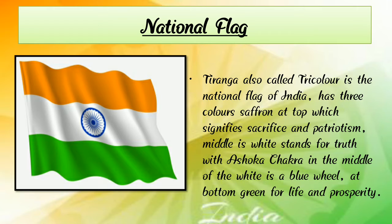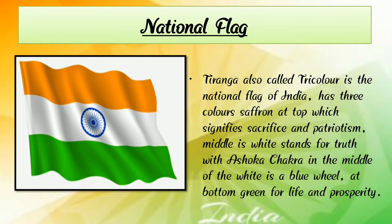The middle white stands for truth. The Ashoka Chakra in the center is blue. At the bottom, green stands for life and prosperity. So our national flag has three colors — saffron, white, and green — and each color signifies something important. Children, you all understand about our national flag.